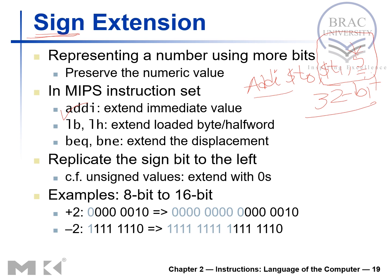The value 5 in binary is 000101. Since this is positive, we put all zeros in the upper bits to extend it to 32 bits. With this 32-bit representation, we can add it to whatever is inside t1, because t1 is also 32-bit, and we can perform this addition.